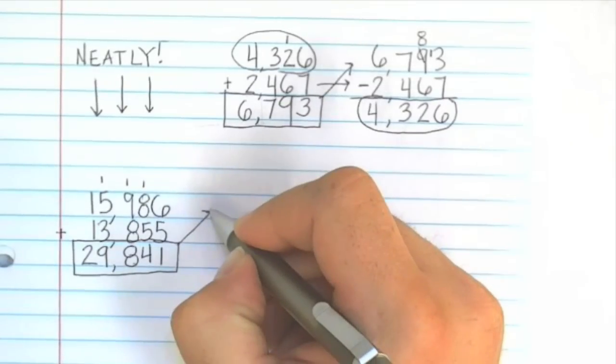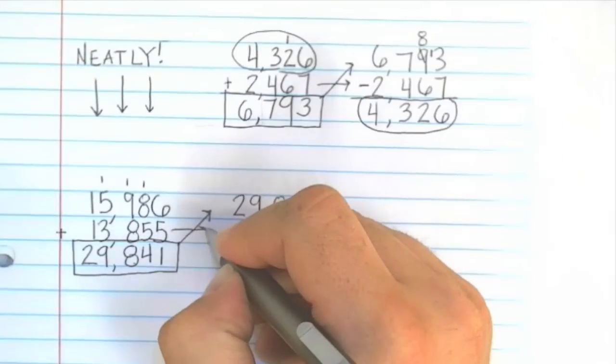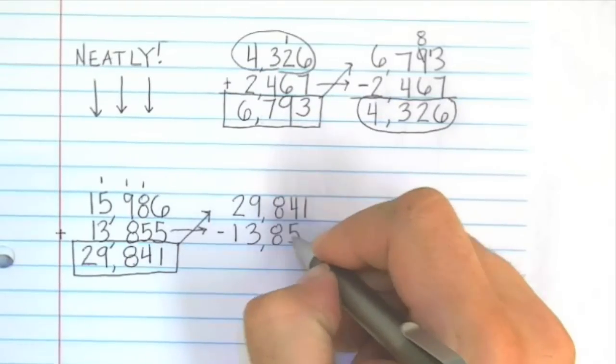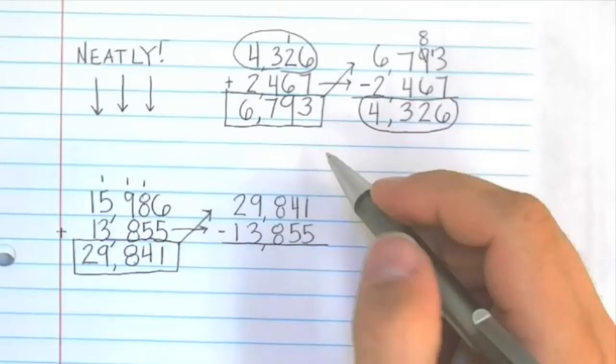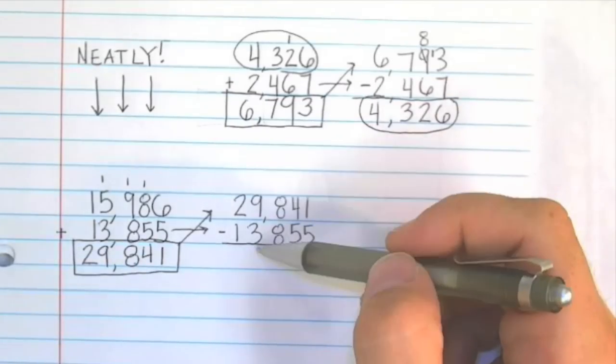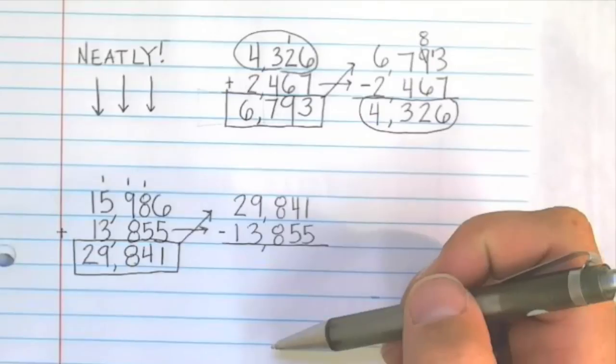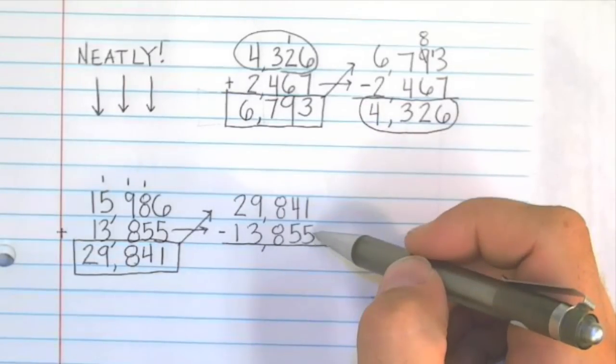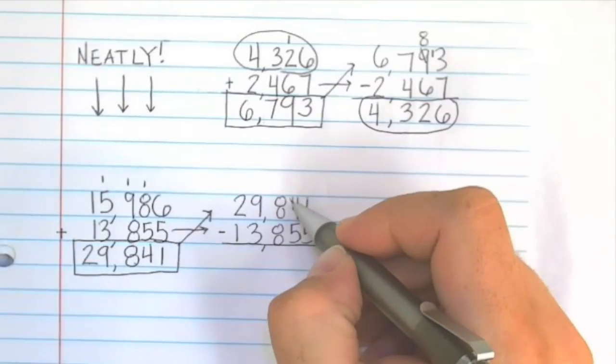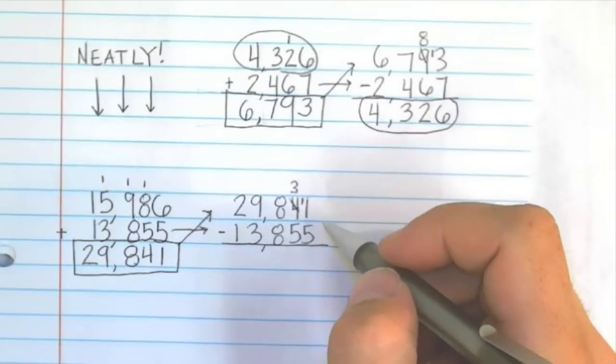29,841 minus 13,855. Again, my numbers are written neatly. And the 1s column, the 10s column, the 100s column, the 1000s column, the 10,000s column, are all lined up vertically on top of each other. Start always in the 1s place. 1 minus 4, we can't do that. So we go over to this 4. We borrow from the 4. So the 4 becomes a 3. This 1 becomes 11. 11 minus 5 is 6.